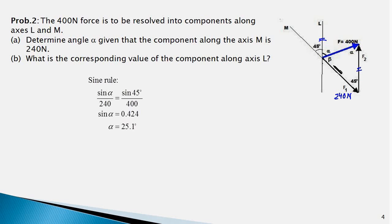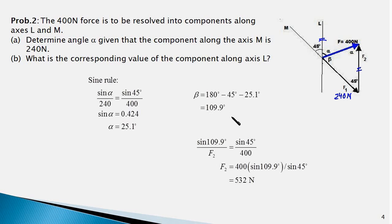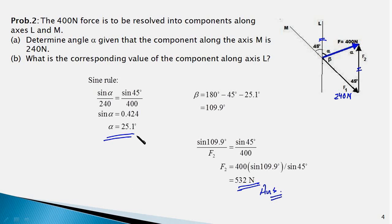Now we know two angles — alpha and 45 degrees — so the third angle works out to 109.9 degrees. Applying the sine rule again: sin(109.9°) / F2 = sin(45°) / 400, which simplifies to F2 = 532 N. Therefore, the force should make an angle of 25.1 degrees with line L so that the component along line M is 240 N and the second component is 532 N. Thank you for watching; if you liked the video, please like and subscribe.